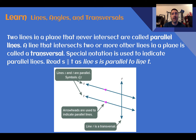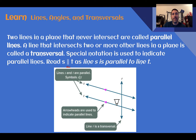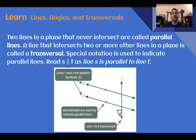Two lines that never intersect are called parallel lines. A line that intersects two or more other lines in a plane is called a transversal. Special notation is used to indicate parallel lines — this is read as line S is parallel to line T. In a picture, we will often see little arrowheads showing which lines are parallel, and that's helpful because parallel lines have specific angle properties. A line cutting across two or more other lines is called a transversal, so line R here is a transversal.